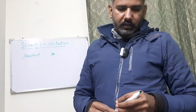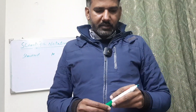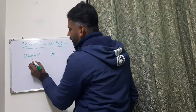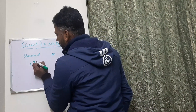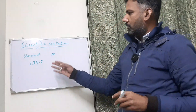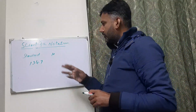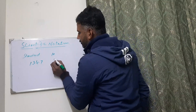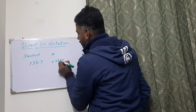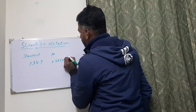The internationally accepted practice is that there should be only one non-zero digit to the left of the decimal. So the number we write in scientific notation looks like 1.34 times 10 to the power 2.